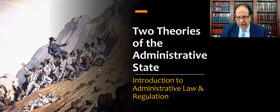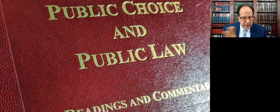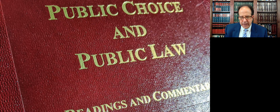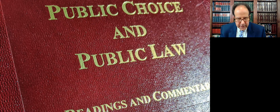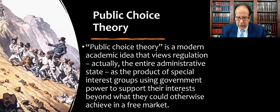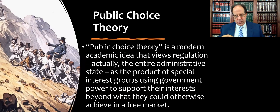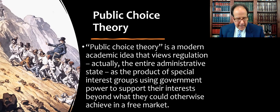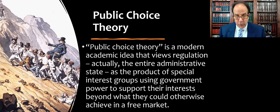I just want to compare and contrast a few ideas here. I'm going to call this public choice theory for the new or modern view, because that's what's showing up in casebooks. As we go through this, you may think I'm really just talking about libertarianism, an anti-regulation viewpoint, classic free market economics, or depending on your law school, the neoliberal view. Public choice theory is a modern academic idea that views regulation and the entire administrative state as the product of special interest groups using government power to support their interests beyond what they could otherwise achieve in a truly free market.